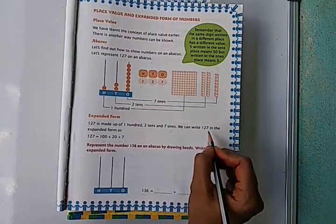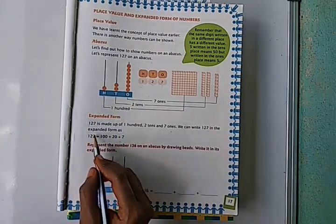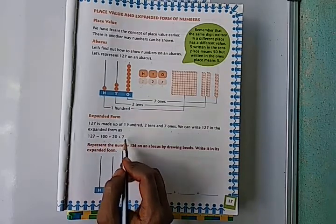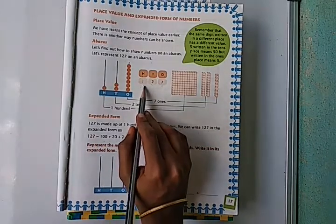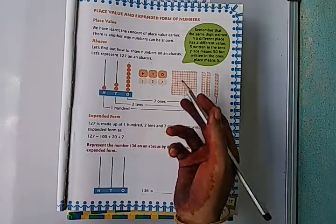We can write 127 in the expanded form as 127 = 100 + 20 + 7. We are simply writing these numbers by their place values, that means the value of the place.